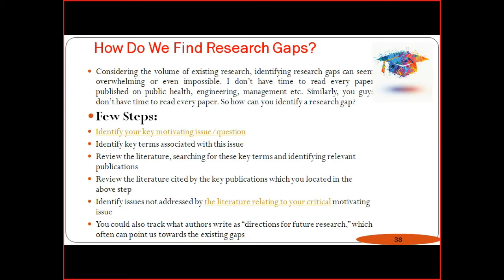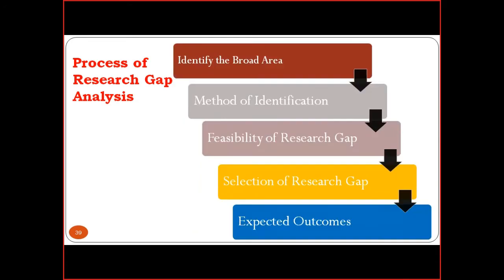The fourth step: identify issues not addressed by the literature relating to your critical motivating issue. Some papers do not address certain types of issues — many components are missing. You can also track authors by the direction of future research they mention, which often points toward existing gaps. Many papers mention future scope for research and give the direction in which a new researcher should proceed. These guidelines definitely help finalize the research gap.